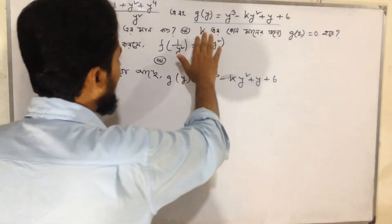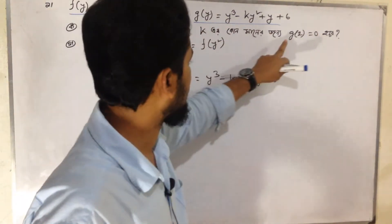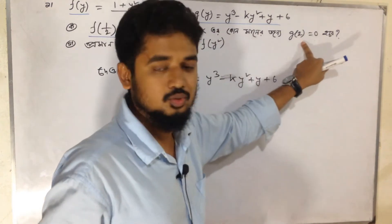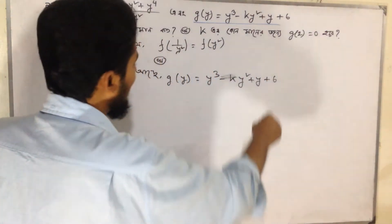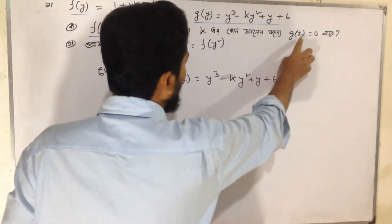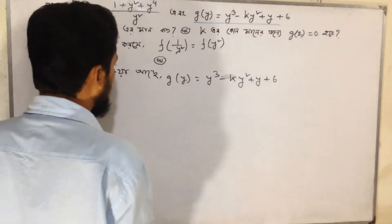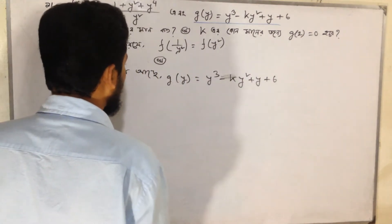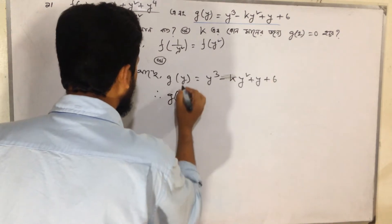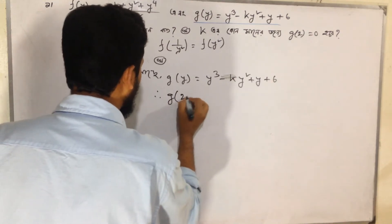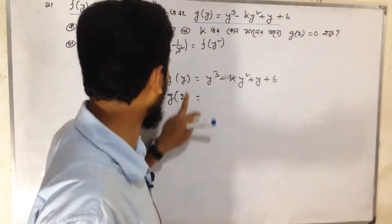If we have k, then g(2) equals 0. We can see this: g(2) equals 0 is the first step. Then if we apply the first step, g(2) equals 2.